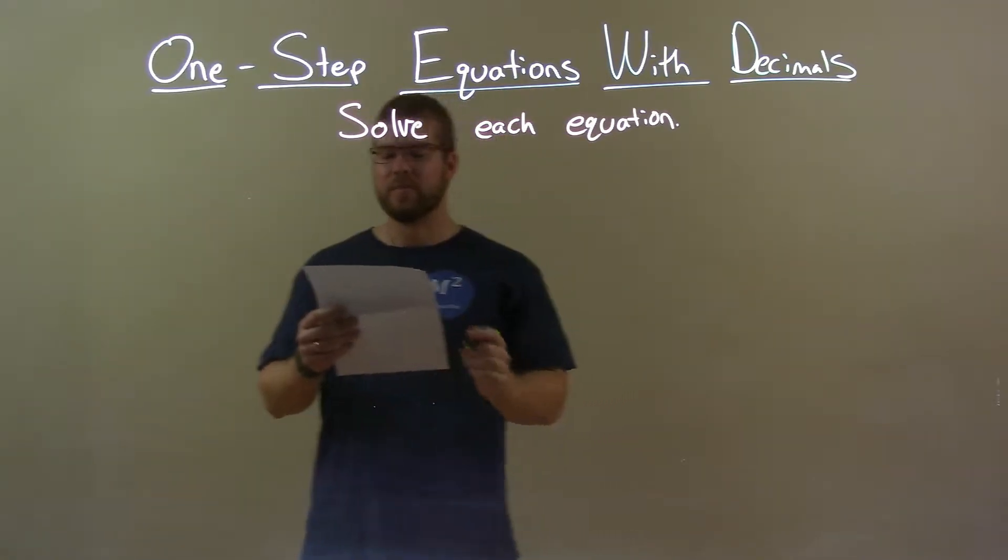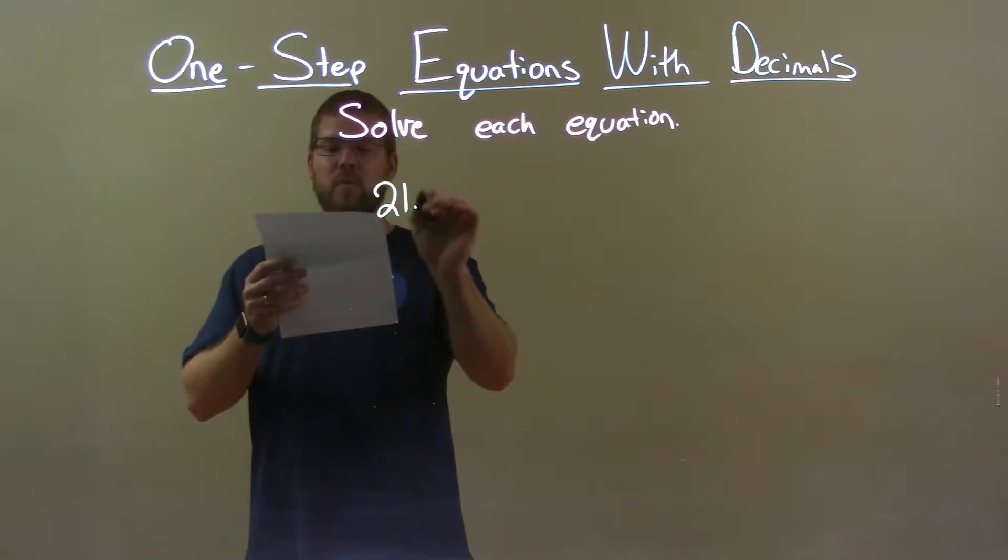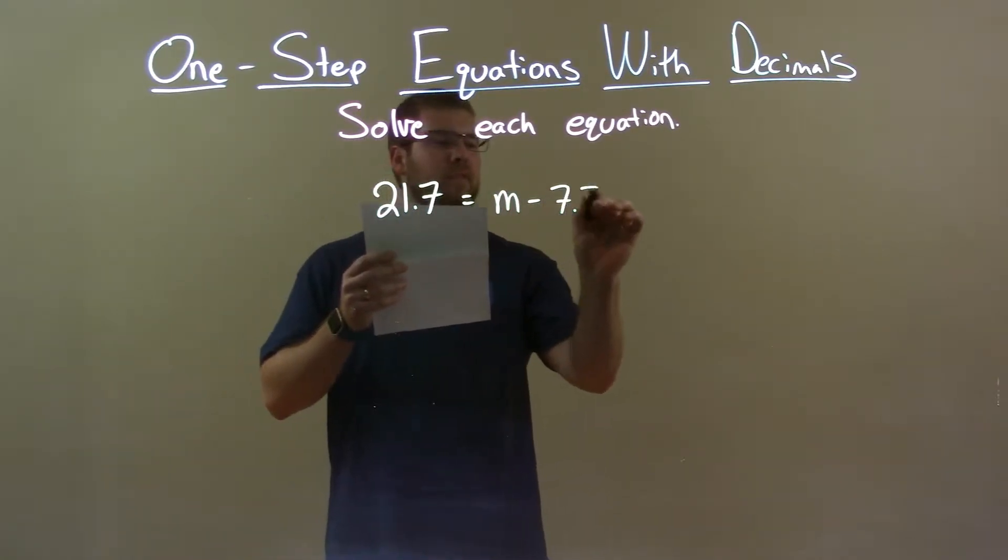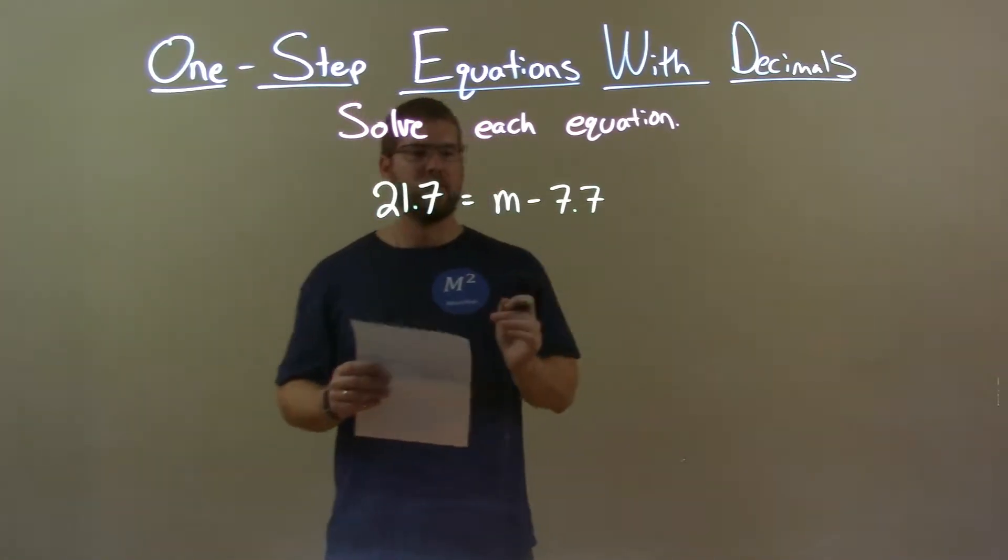If I was given this equation: 21.7 equals m minus 7.7. We want to get m by itself.